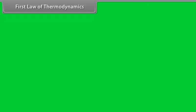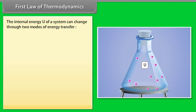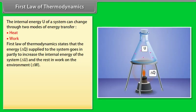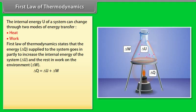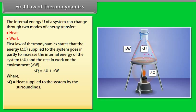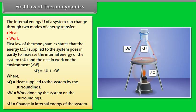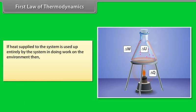First Law of Thermodynamics: the internal energy U of a system can change through two modes of energy transfer — heat and work. The first law states that the energy delta Q supplied to the system partially increases the internal energy delta U, and the rest does work on the environment delta W. So, delta Q = delta U + delta W. If heat supplied is used entirely in doing work on the environment, then delta U = 0, giving delta Q = delta W.